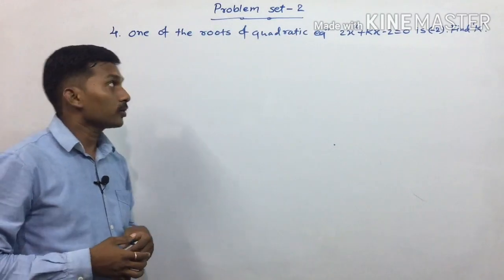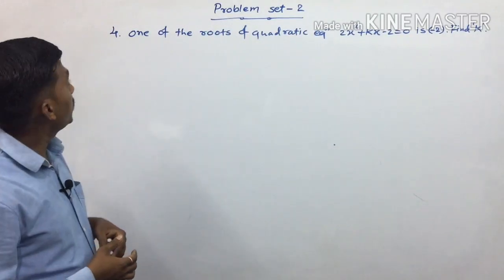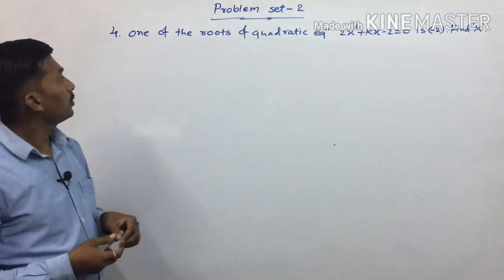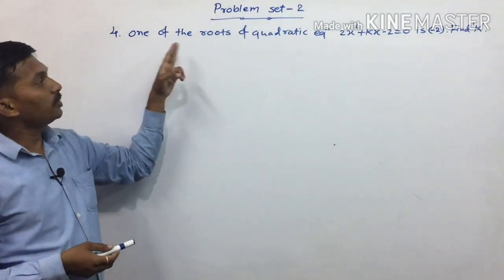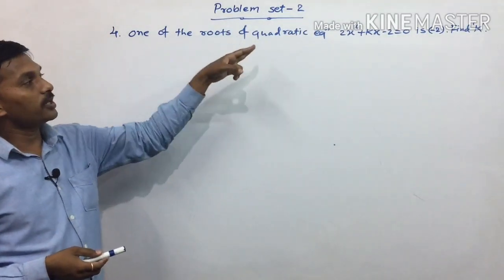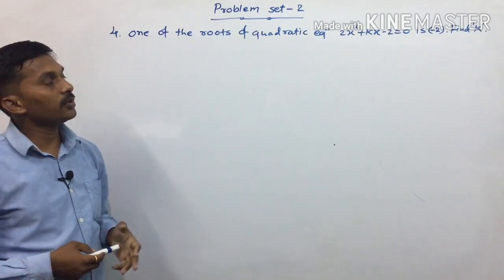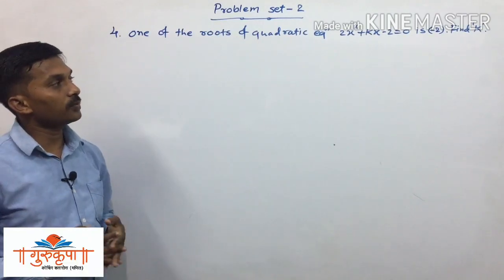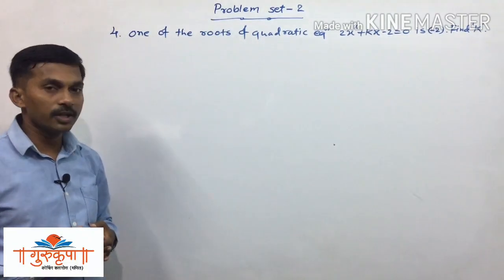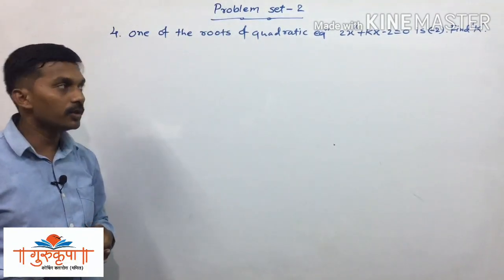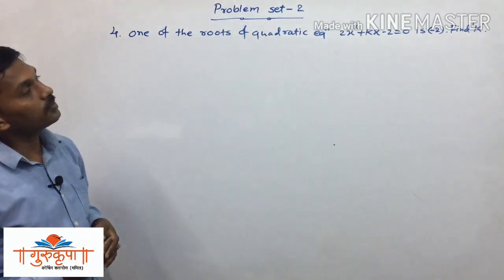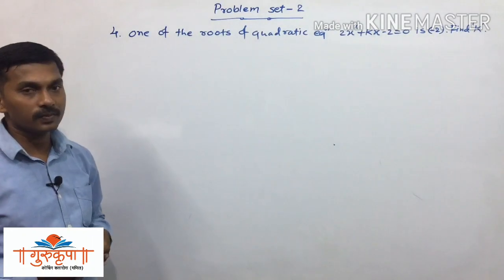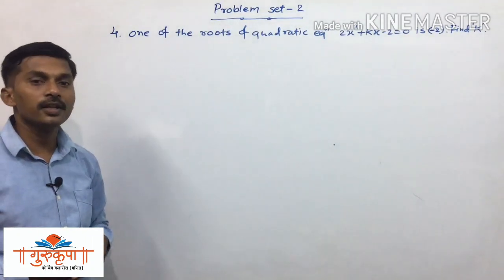Question number 4 from problem set 2. One of the roots of the quadratic equation 2x squared plus kx minus 2 equals 0 is minus 2. Find k.